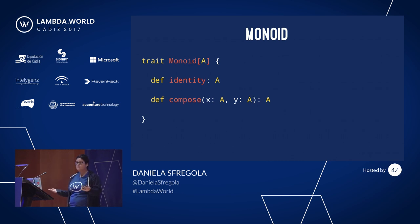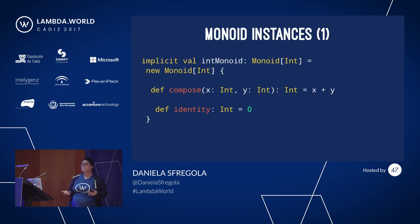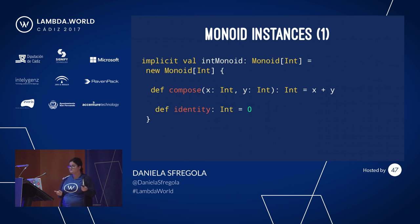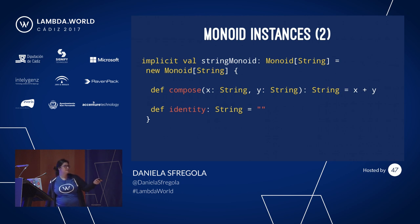In Scala, we have type classes. All this means is that we need to define a type class called Monoid that has two functions: an identity and a composition function we call 'compose'. For example, if we want to implement the instance of a Monoid for Int, 'compose' will simply be the sum between two ints and the identity will be zero. This doesn't apply only to Int — it also applies to Strings, where the Monoid composition is concatenation of two strings and the identity is the empty string.